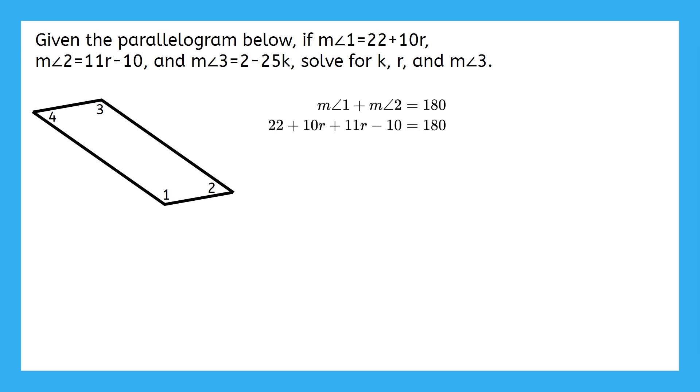If I substitute both of my expressions for the measure of angles 1 and 2, I get 22 plus 10R plus 11R minus 10 equals 180. I simplified the left side of my equation first by combining my like terms. From here I have a nice two-step equation to solve. I can subtract 12 from both sides, and then I can divide both sides by 21 to get my final answer of R equals 8. Remember, if you solve your equation differently than I do, that is okay, as long as we both have the same final answer. Since there are multiple parts to this problem, I'm going to keep track of all of my final answers up top here.